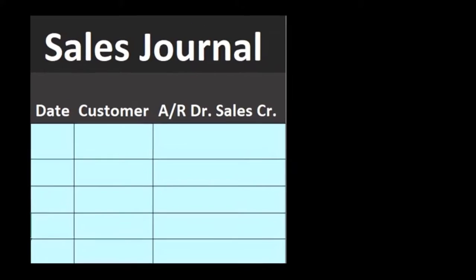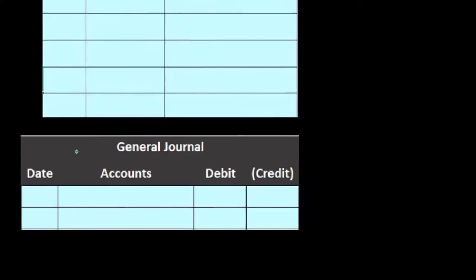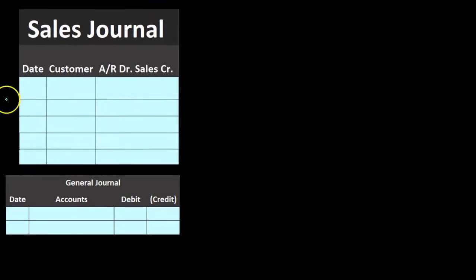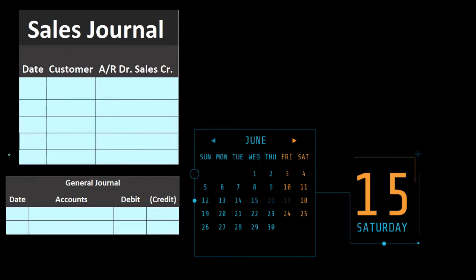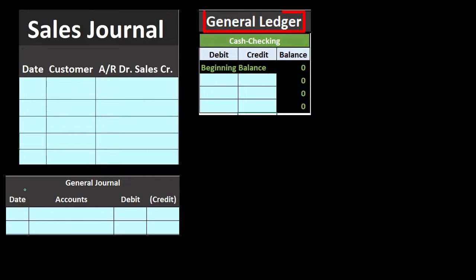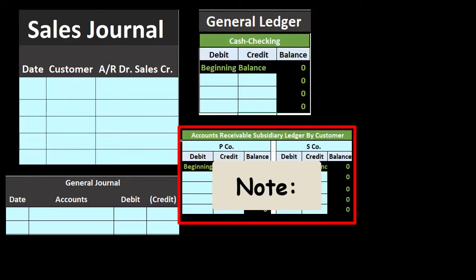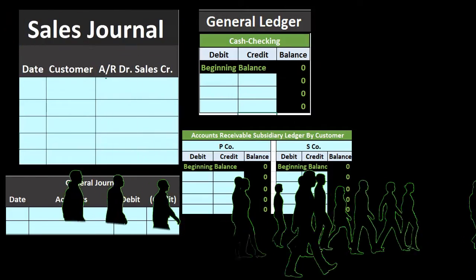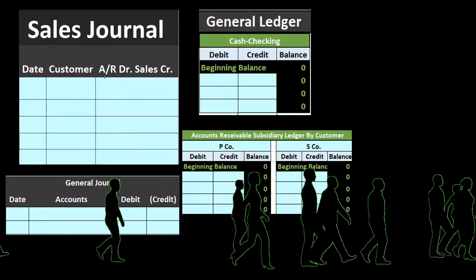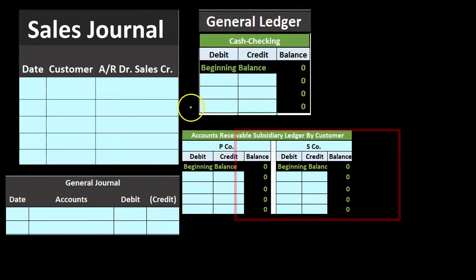If we look at the sales journal, we're going to record all the sales throughout the time period. Then we will sum those up and make one general journal entry — that being the component that saves time, instead of having a separate journal entry for each transaction within the sales journal. We will record one transaction at the end of the time period, in our case the month. Then we take that general journal entry and post it to the general ledger. We'll use that general ledger to create the subsidiary ledger as well. The subsidiary ledger breaks out the accounts receivable, showing us how much each customer owes us.